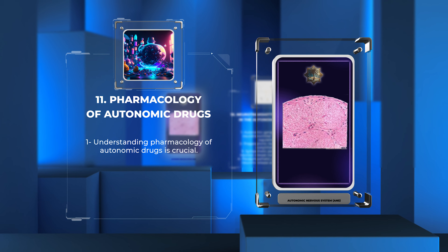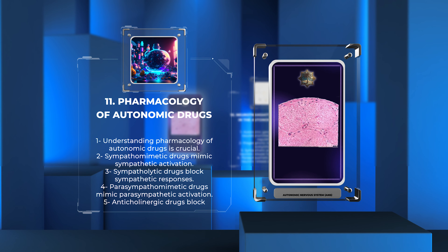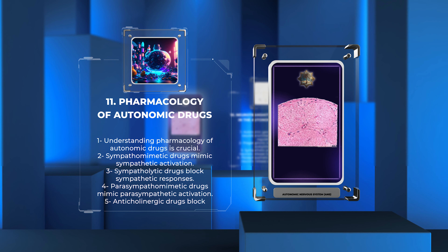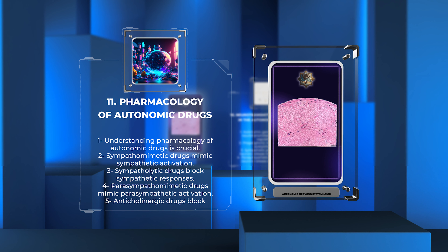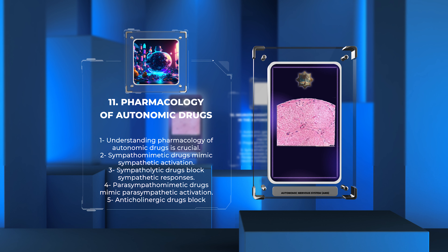Understanding the pharmacology of autonomic drugs is crucial for managing clinical conditions associated with the autonomic nervous system. Sympathomimetic drugs mimic sympathetic activation, such as epinephrine and norepinephrine. Sympatholytic drugs, on the other hand, block sympathetic responses, and examples include beta-blockers. Parasympathomimetic drugs mimic parasympathetic activation, such as muscarinic agonists, while anticholinergic drugs block parasympathetic responses.